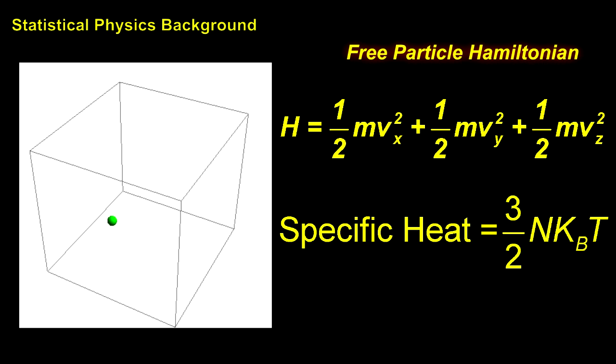A degree of freedom is any term in the Hamiltonian with a squared coordinate. There are three such squares for a monatomic gas, and the predicted specific heat is three-halves nkt, which agrees well with experiment.